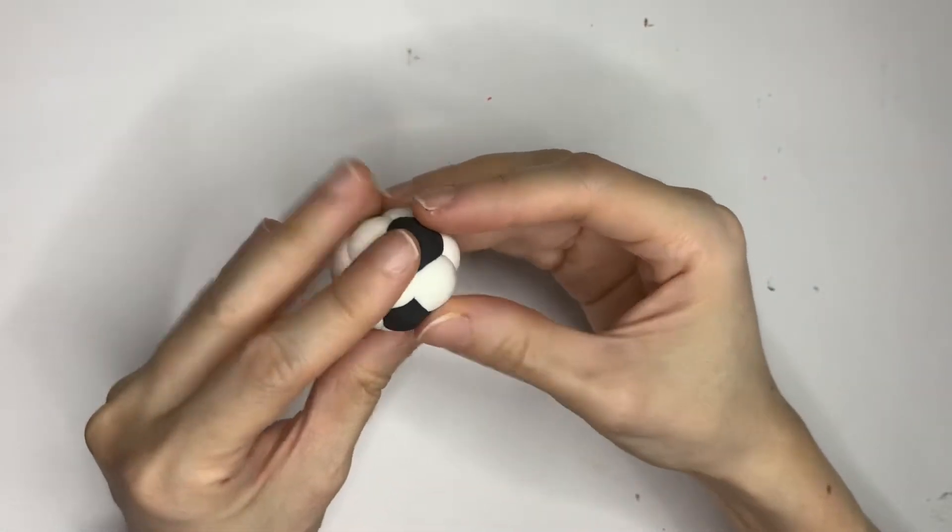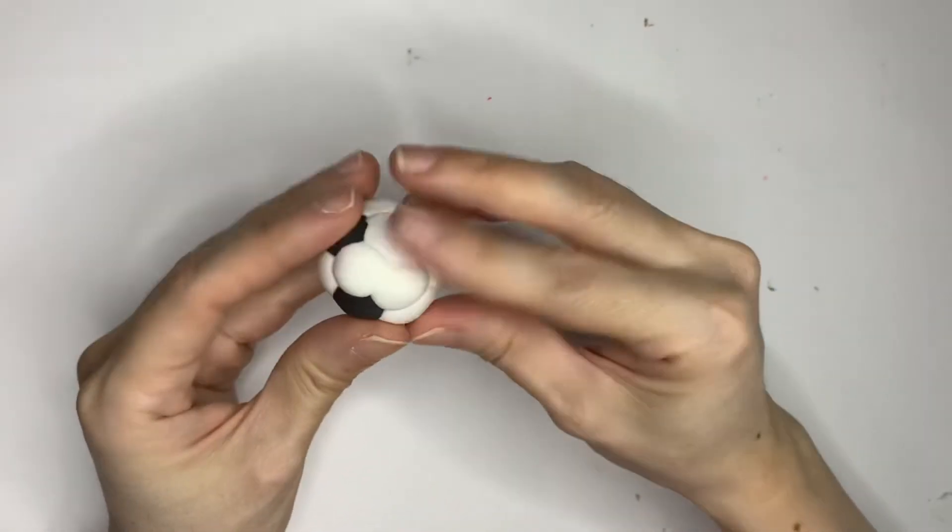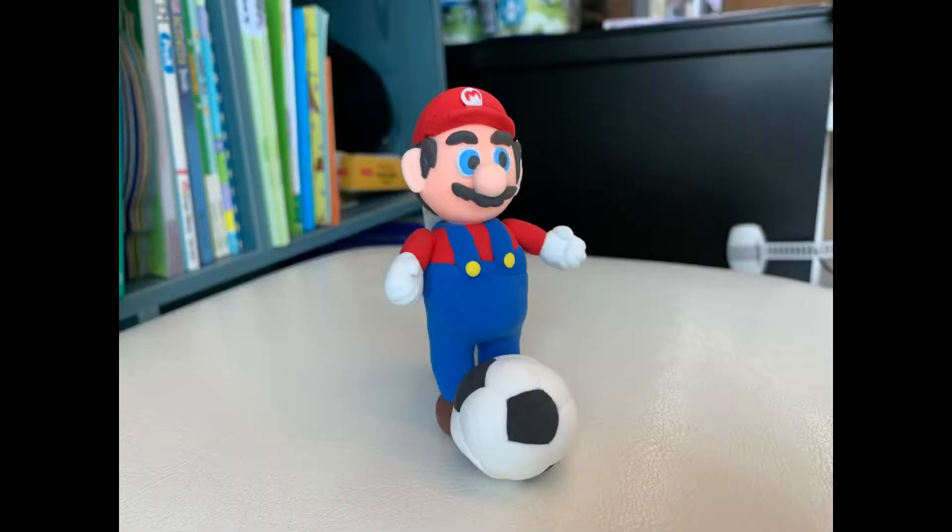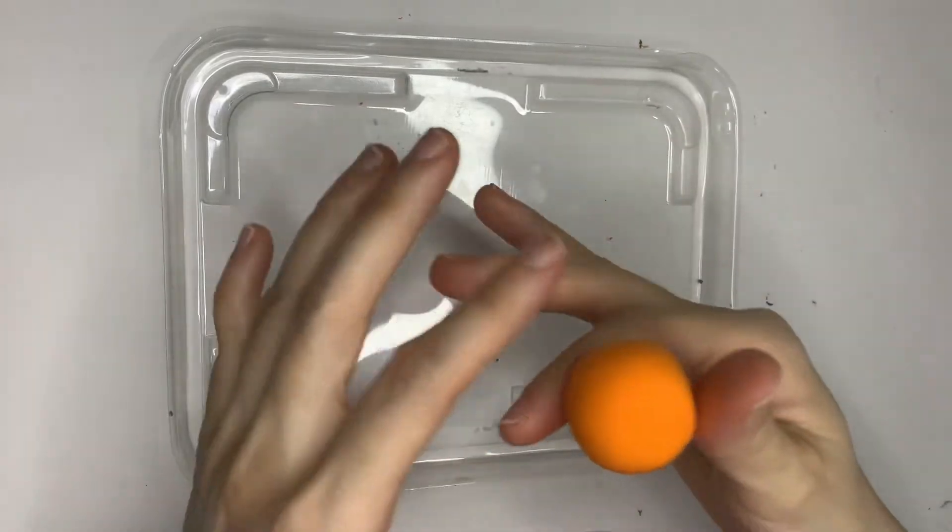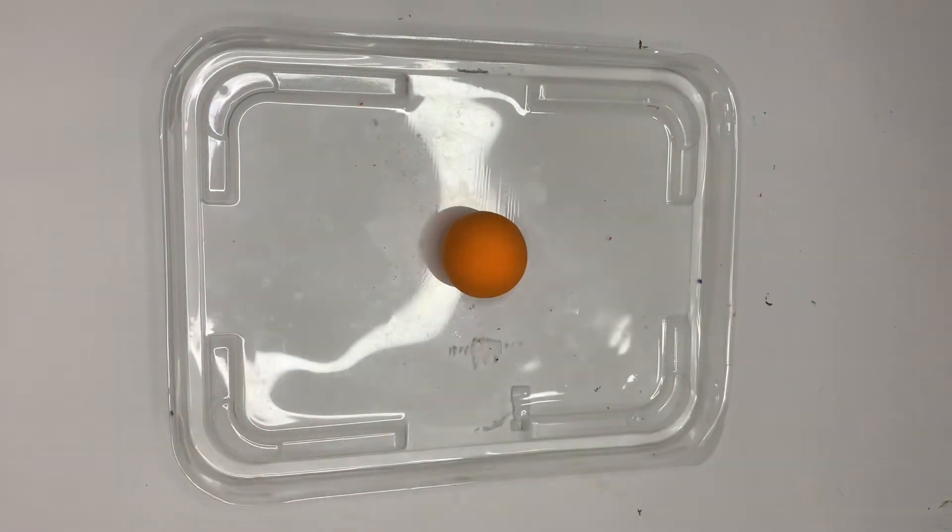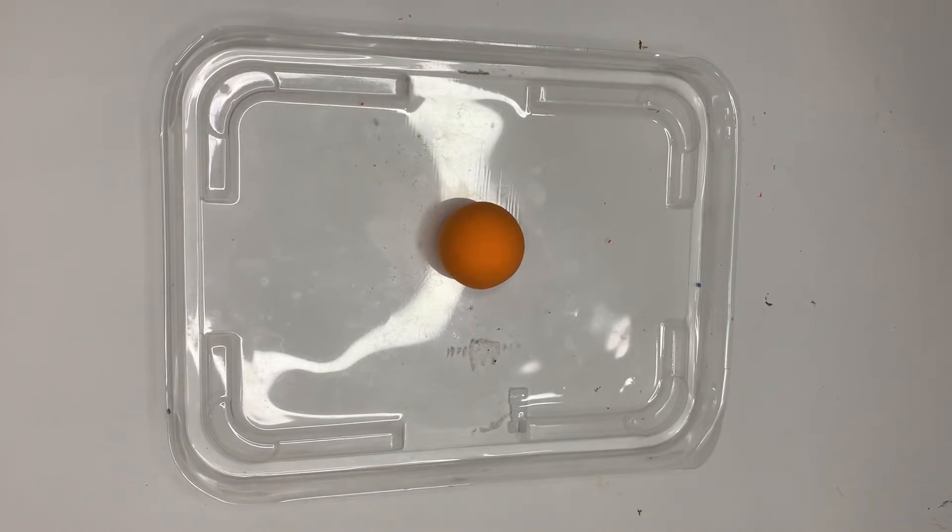Now let's make the basketball. We can always roll up an orange color ball and then use a marker pen to draw the lines, but today I'm going to show you how we can use air clay to make the black lines on the ball.